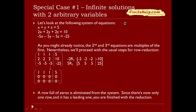Here we're going to talk about infinite solutions with arbitrary variables. Consider this following system of equations — as you might notice, the second and third rows are just multiples of the first. We proceed with the usual row reduction steps anyway. We multiply negative 2 times row 1 for row 2 and positive 5 times row 1 for row 3, then add side by side. Both become rows full of zeros. A row full of zeros is eliminated from the system because it says 0x plus 0y plus 0z equals 0, which is always true and says nothing.